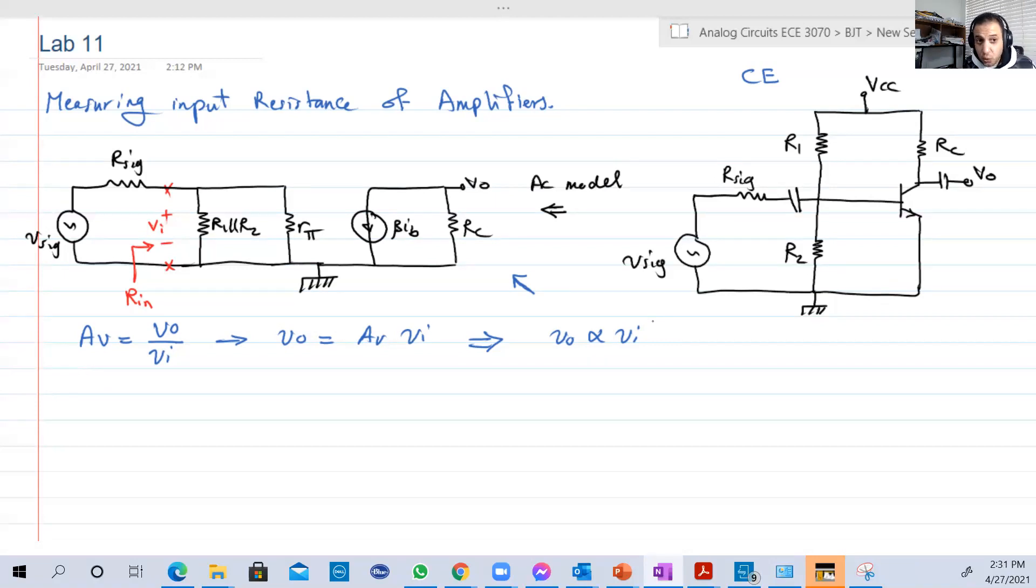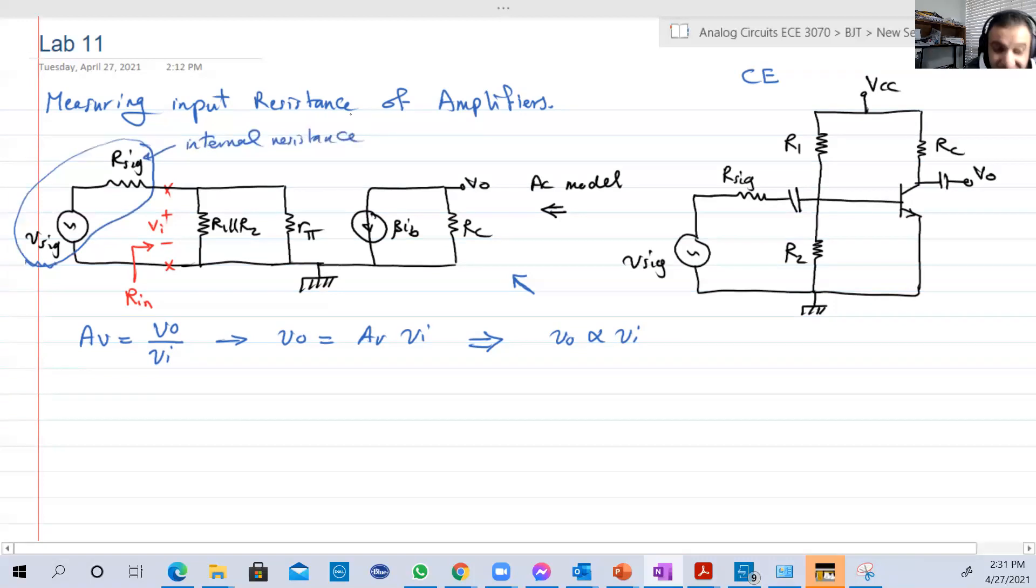We want to amplify Vo, but if the input itself is big, that will make the output bigger. But the ratio is constant, it's Av. The question is, where is the input exactly? Remember, the input is not the signal. The input is another voltage in the circuit, which is basically the voltage across the terminals of the signal source. The signal source is not just the signal. The signal source is basically V signal and its internal resistance.